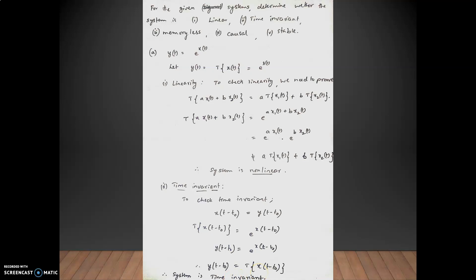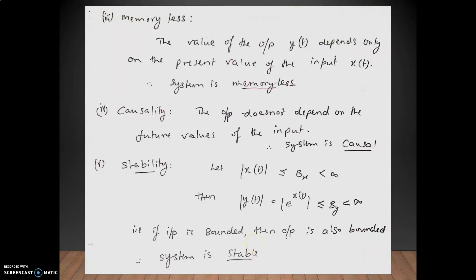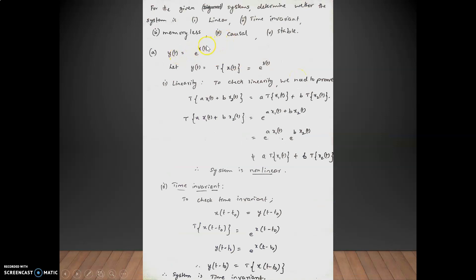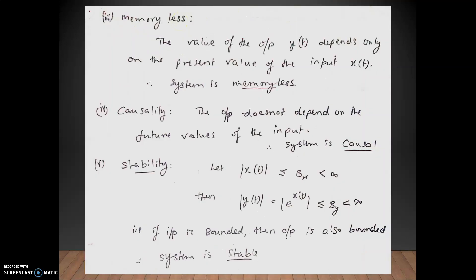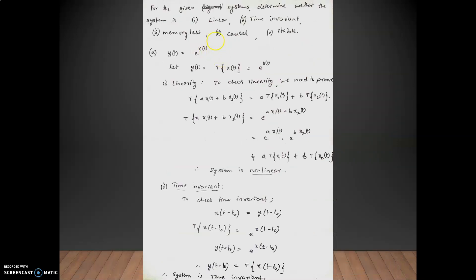Next we check whether the system is memoryless. The output y(t) depends only on the present value of the input x(t). If we replace t by t₀, we get y(t₀) = e^x(t₀). Since the output always depends only on the present value of the input, the system is memoryless.